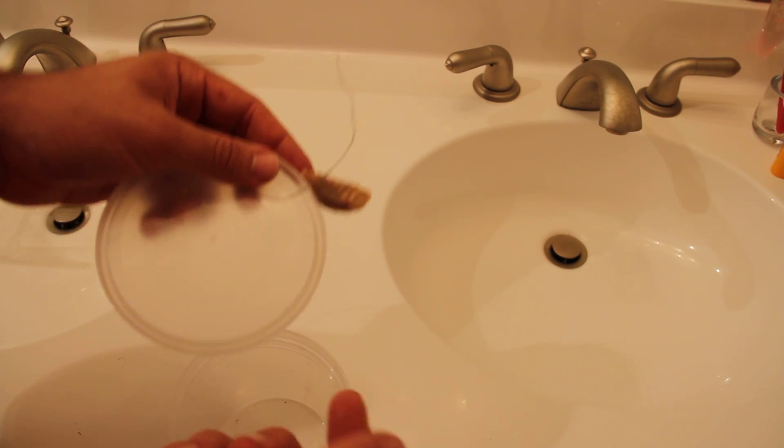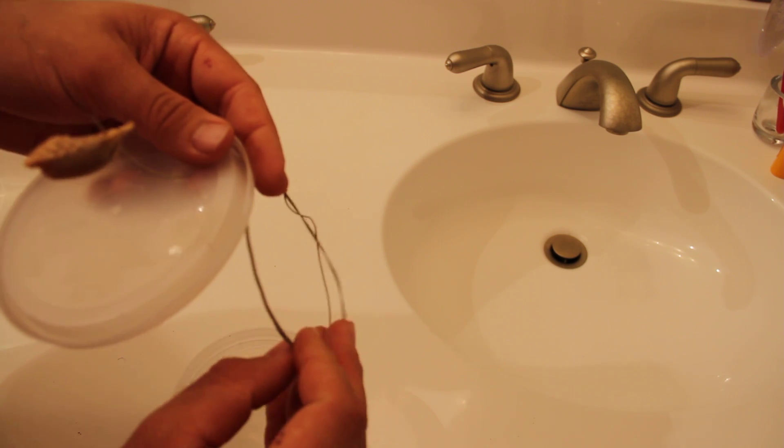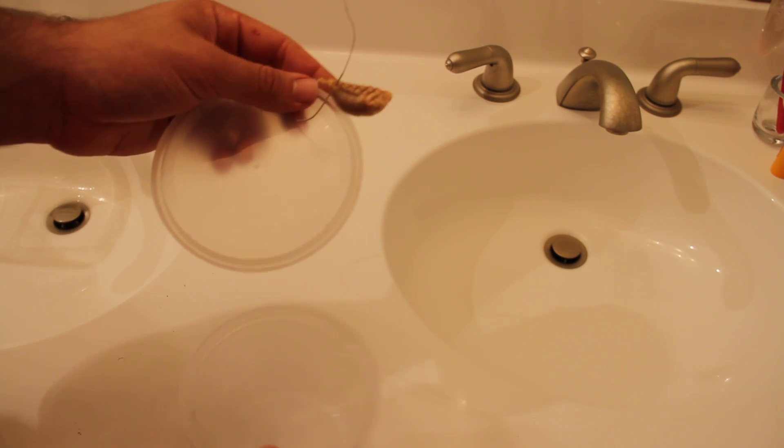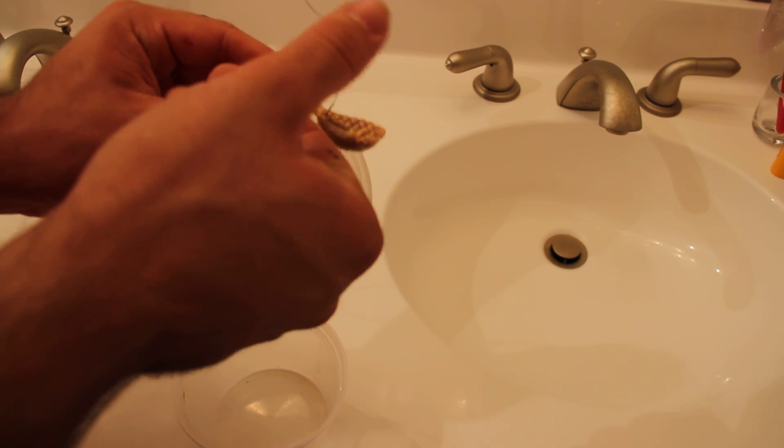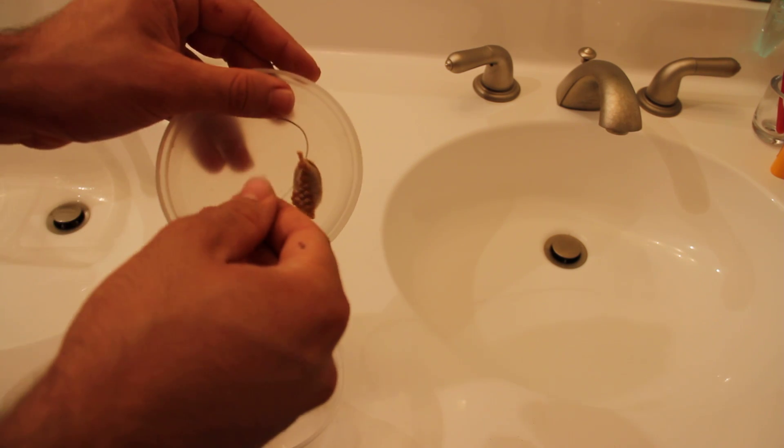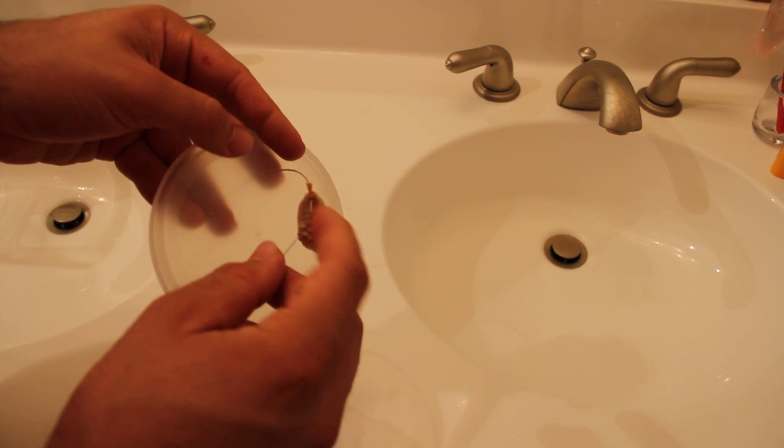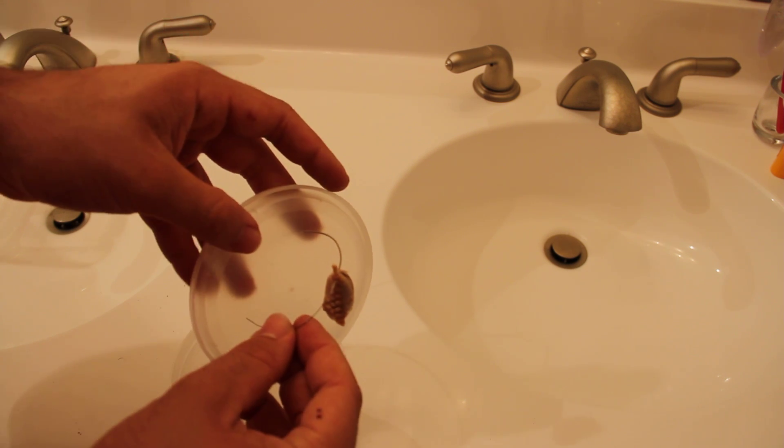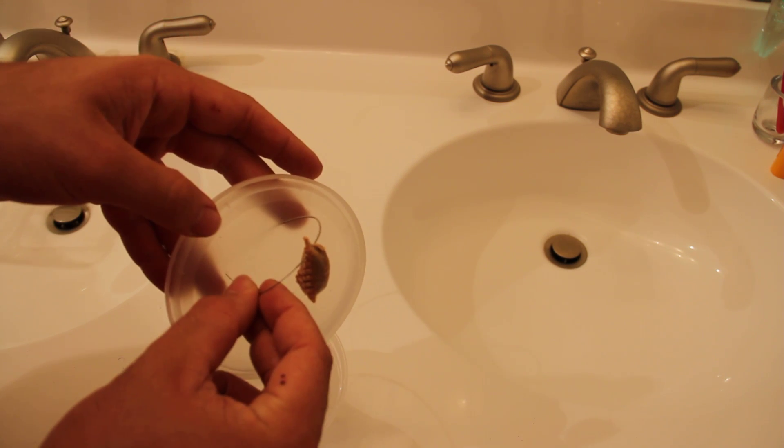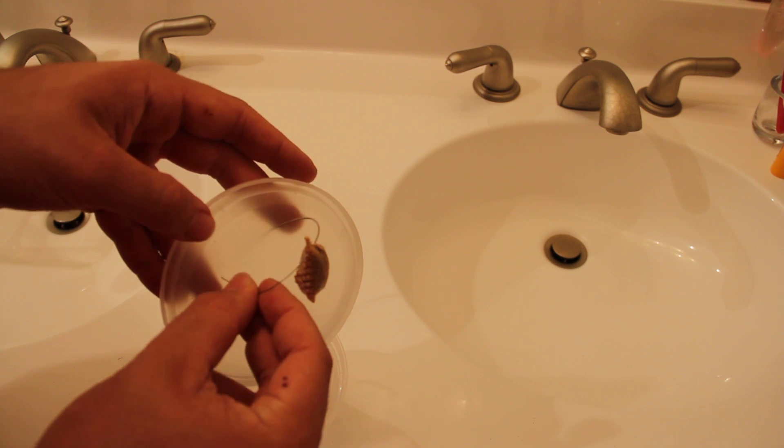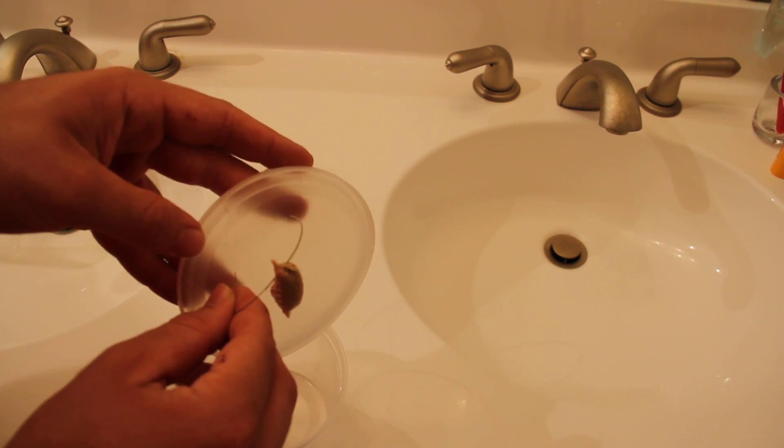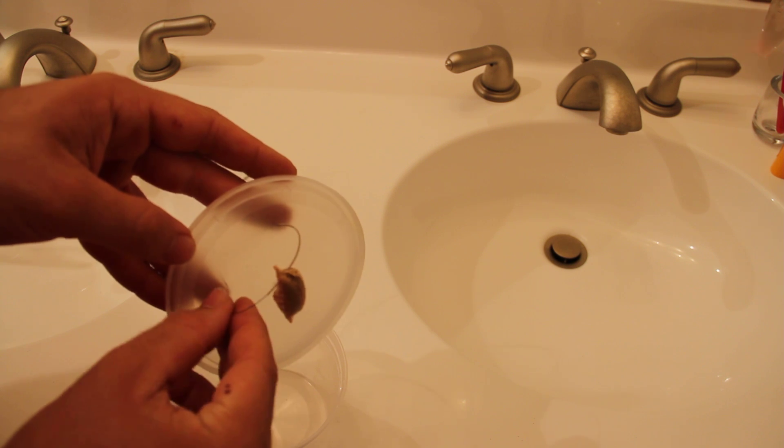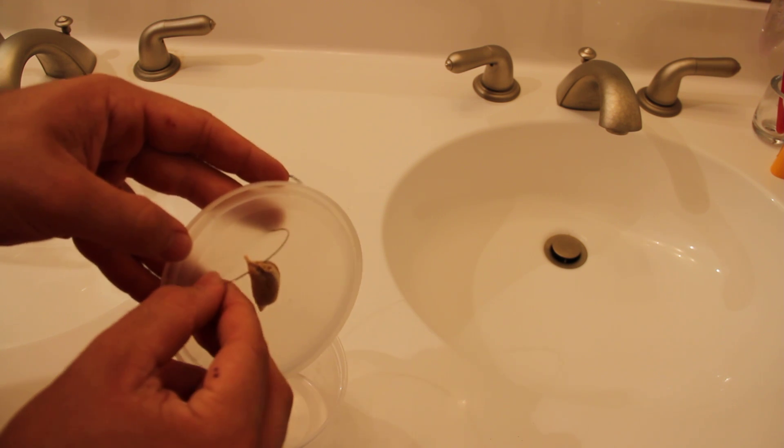So then what I did is I took this old guitar string that I found. I poked some holes in here already from when I caught the mantis and so all I did was just poke it through the edge there. I mean that's where there's less eggs so you're most likely just hitting the foam stuff there.